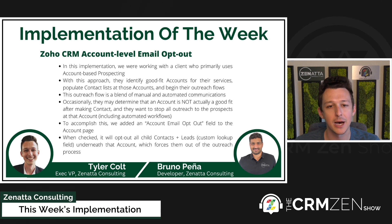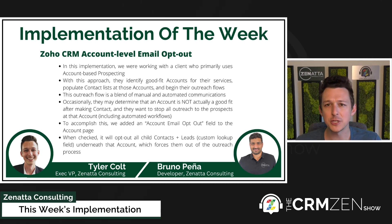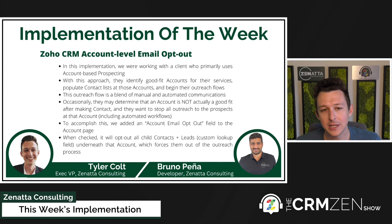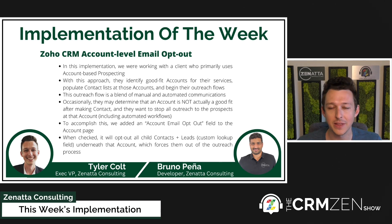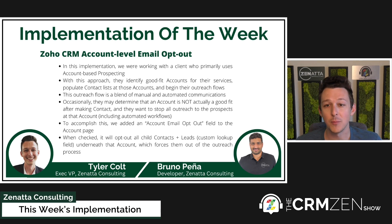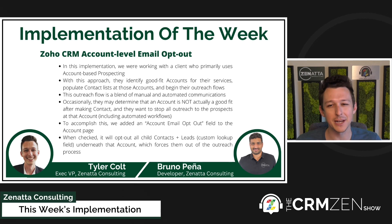They find the right people at that company and do some outreach to see if they can get in the room and talk about how the client may be able to add value. This outreach flow is a blend of both manual and automated communications, and through that process they may determine that a certain account is not a good fit — either someone at the account says they've already got someone fulfilling that service, or the client gets on a call and determines they actually wouldn't be the best fit.